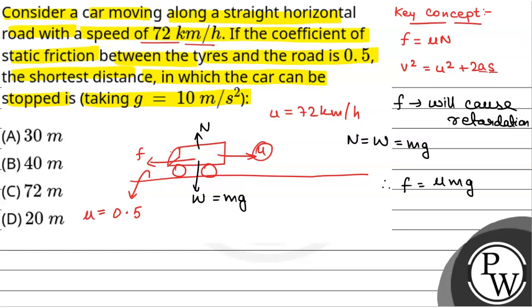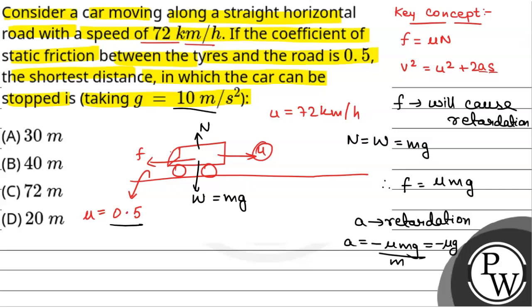Since friction causes retardation of the car, a will be negative. So a equals minus mu mg divided by m — that is force by mass — which gives a equal to minus mu g. Since mu is 0.5 and g is 10 m per second square, a will be equal to minus 5 m per second square.